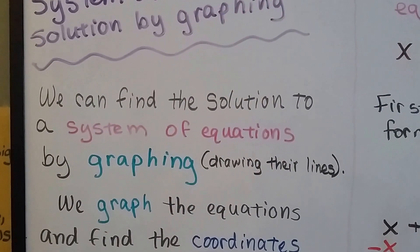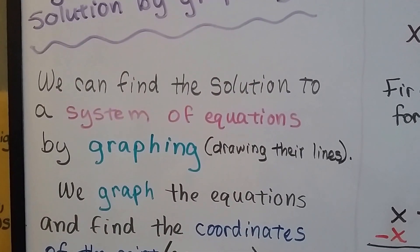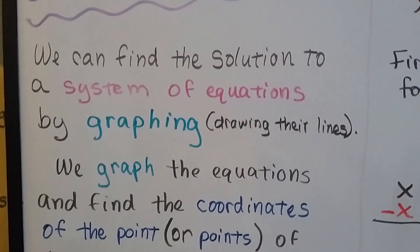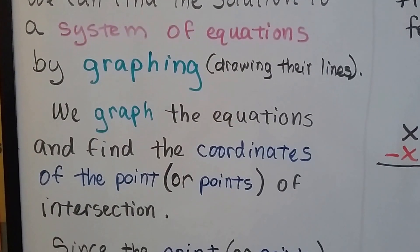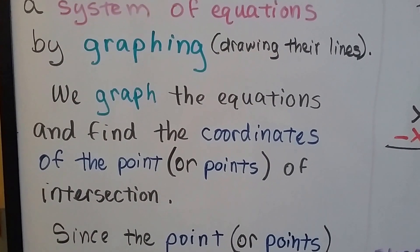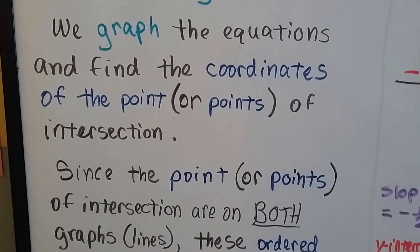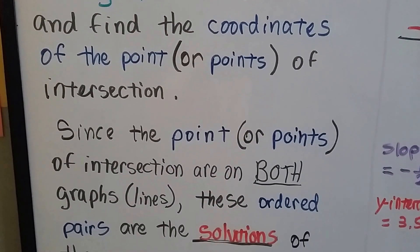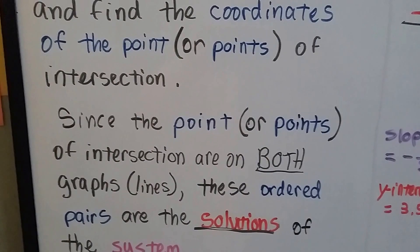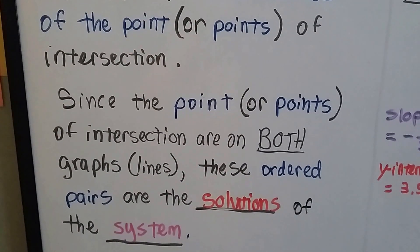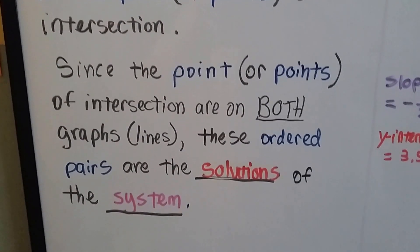So we're going to talk about solutions by graphing now. We can find the solution to a system of equations by graphing, by drawing their lines. We can graph the equations and find the coordinates of the point, or points, of intersection. Since the point, or points, of intersection are on both graphs, both lines, these ordered pairs are the solutions of the system.